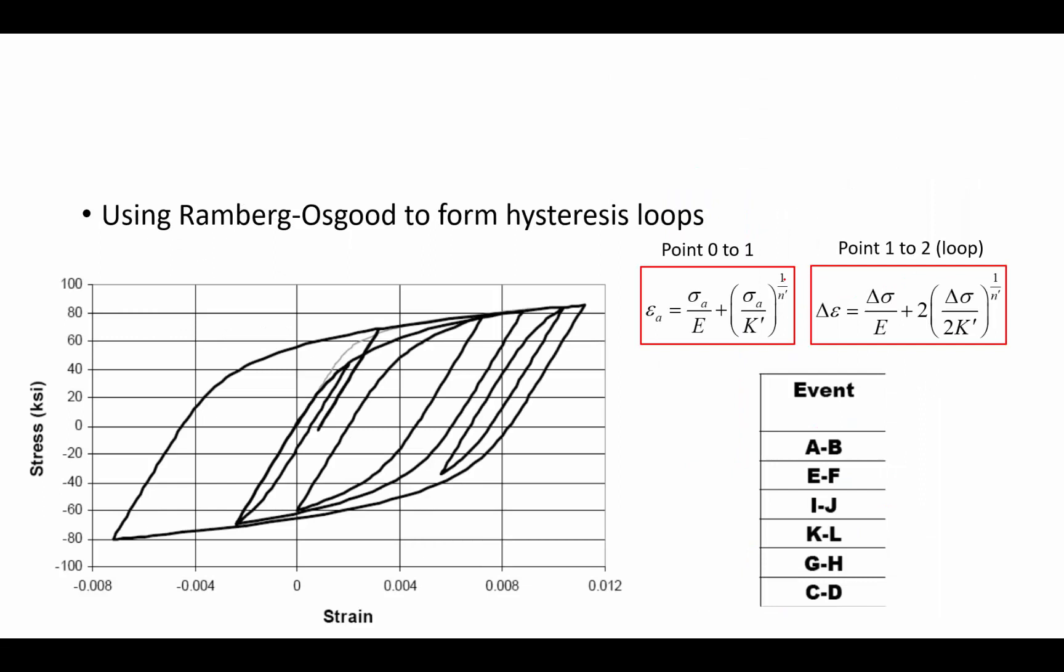So, now that we've created these hysteresis loops, I mean, now that we've defined where the events are, we then need to create hysteresis loops. I think that last one was, see, we've got a partial loop here, so that's that last one that we encountered.